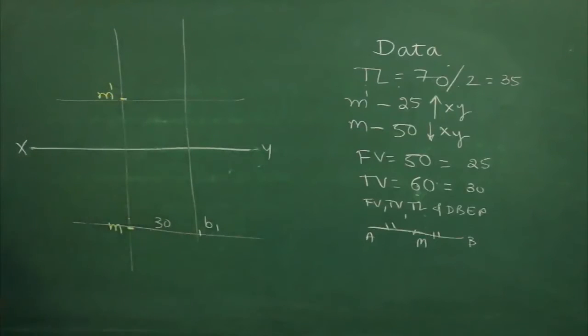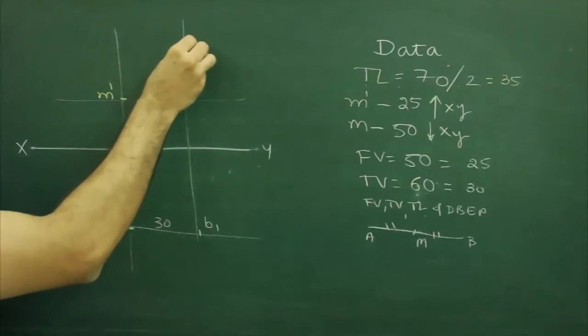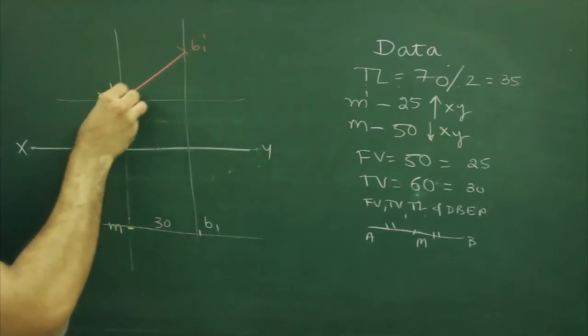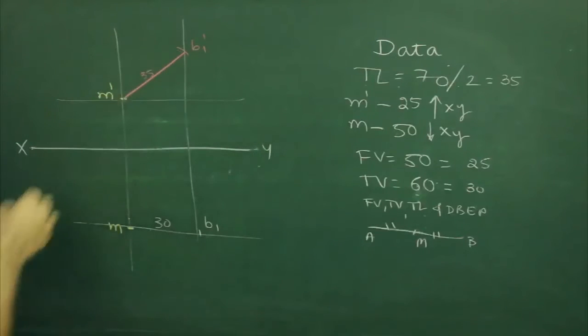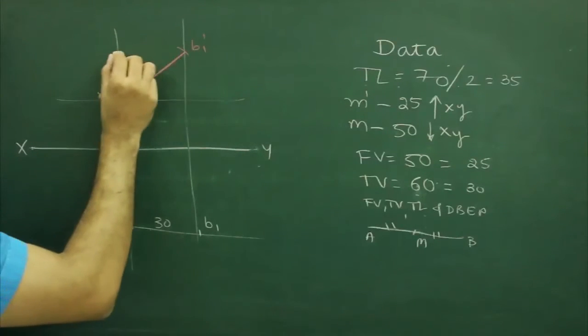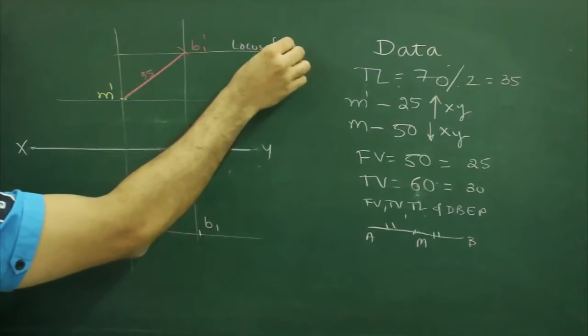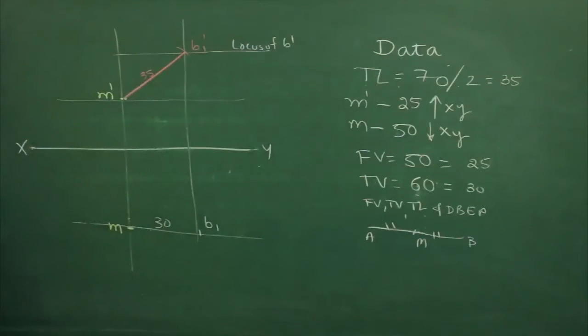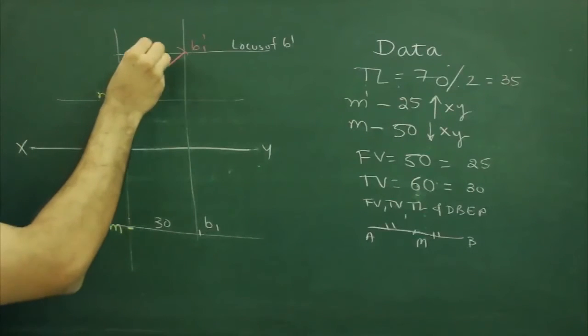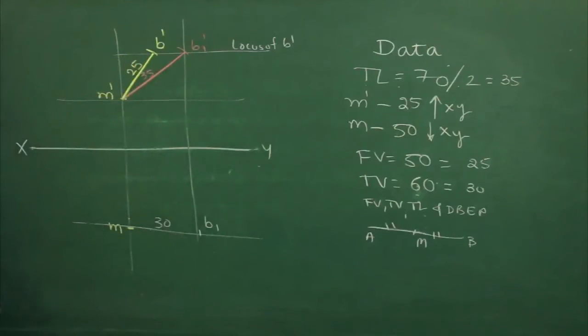We project this half. And from m dash, we will cut true length. But again, we will cut half of the true length, that means we will cut only 35. This will be B1 dash. After that, we will draw locus of B dash. Then we have front view. We will cut only half of the front view, that is m dash D dash, that is 25.